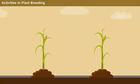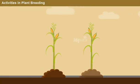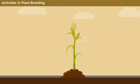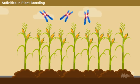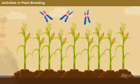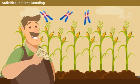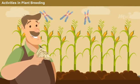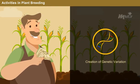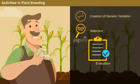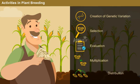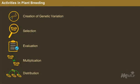Generally, certain activities in plant breeding are executed for making desirable changes in the genotypes of crops as well as to benefit the farmers. They include creation of genetic variation, selection, evaluation, multiplication, and distribution. Let us proceed with each activity in detail.